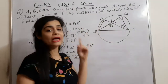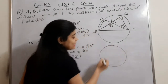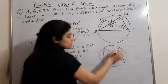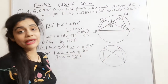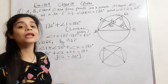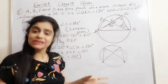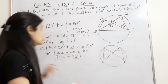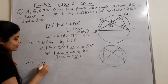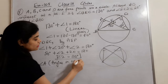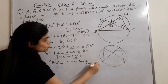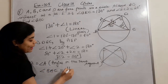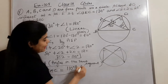What I want to find is angle A. If I want to find angle A, I use the property of angles in the same segment. So angle BAC will also be equal to 110 degrees. That is my answer.